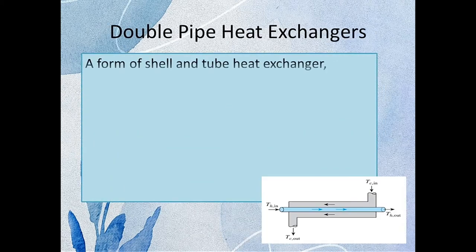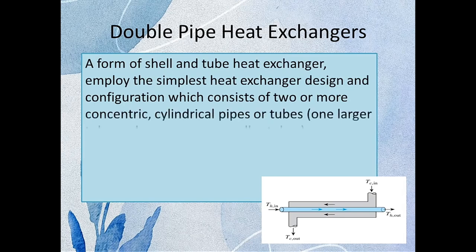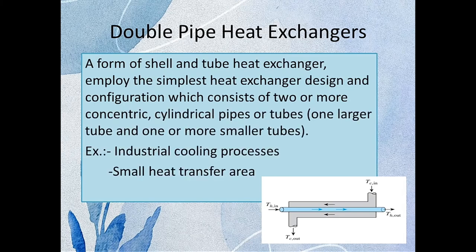Second is double pipe heat exchanger. This is the simplest form of heat exchanger design which consists of two or more concentric cylindrical pipes. Applications are industrial cooling processes and small heat transfer area requirements.